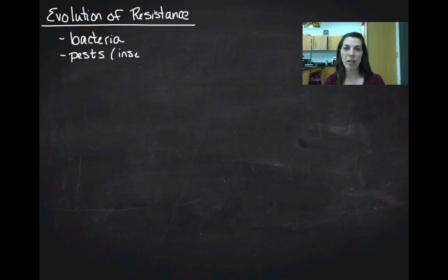We're actually going to talk about the evolution of pesticide or insecticide resistance because it's just not talked about as much. This happens in bacteria and in what we call pest species, so insects and rodents.